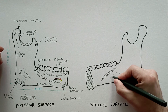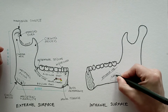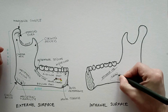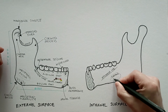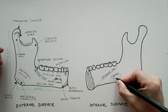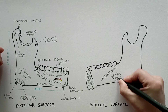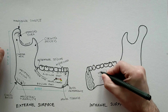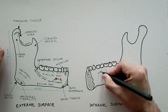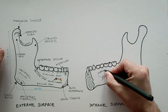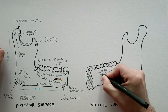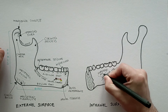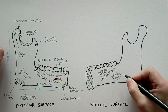The submandibular fossa is the hollow inferior to the mylohyoid line. The submandibular gland rests in this fossa. The sublingual fossa is the hollow located above the mylohyoid line in the premolar region. The sublingual gland rests in this fossa.